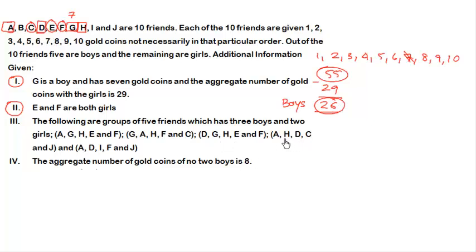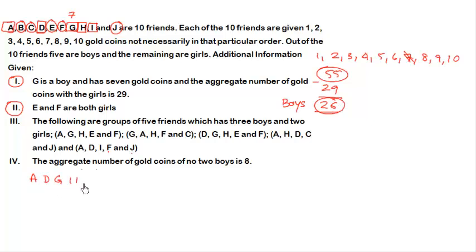In the fourth group — A, H, D, C and J — A, H and D are already boys and C is already a girl, so J must be a girl. That leaves B and I, with one being a boy and the other a girl. The last group — A, D, I, F and J — has F and J as girls, so I must be a boy, which means B is a girl. So the boys are A, D, G, H and I, and the girls are B, C, E, F and J.